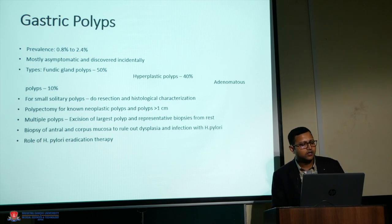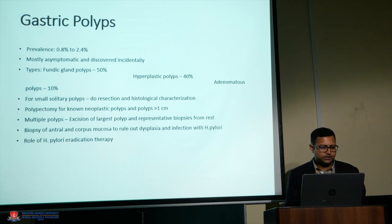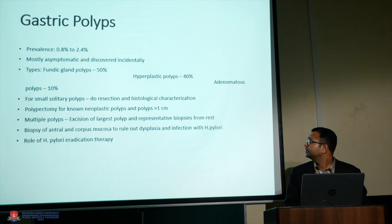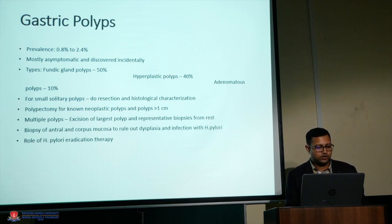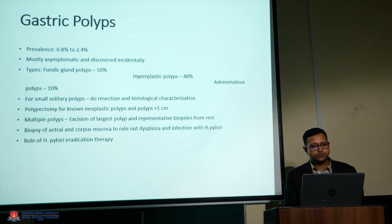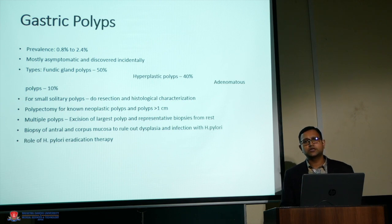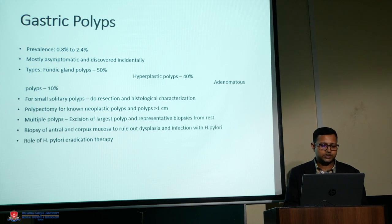These polyps are mostly asymptomatic and we find them when we do routine endoscopy, especially in elderly people. If we classify them broadly, we have three variants: fundic gland polyps, hyperplastic polyps, and adenomatous polyps. The most common are the fundic gland polyps, commonly seen in the fundus region. Hyperplastic polyps are very common with H. pylori infection.